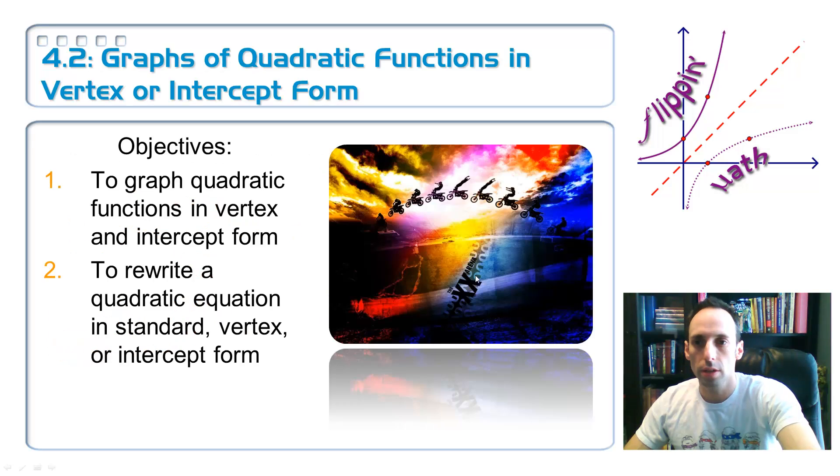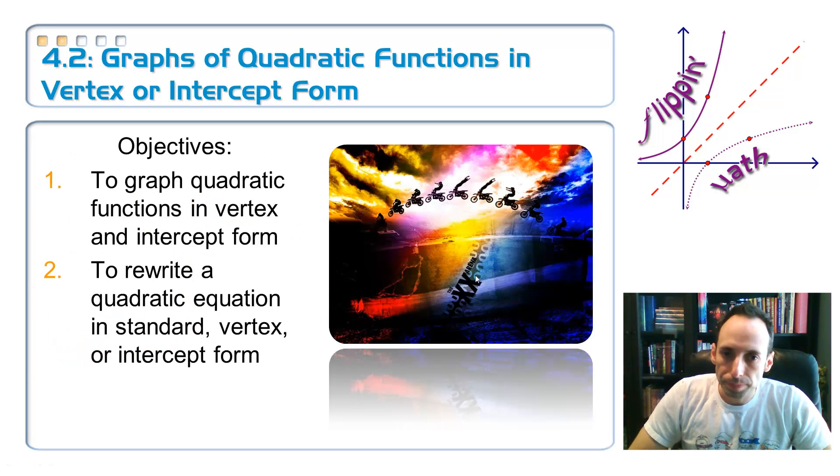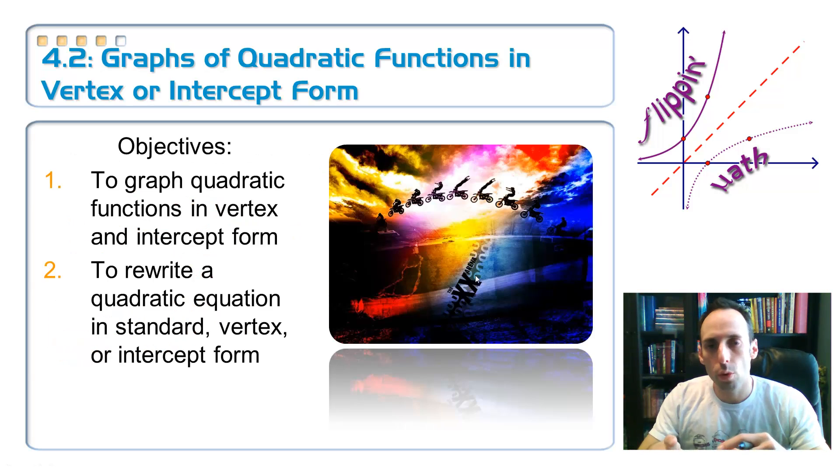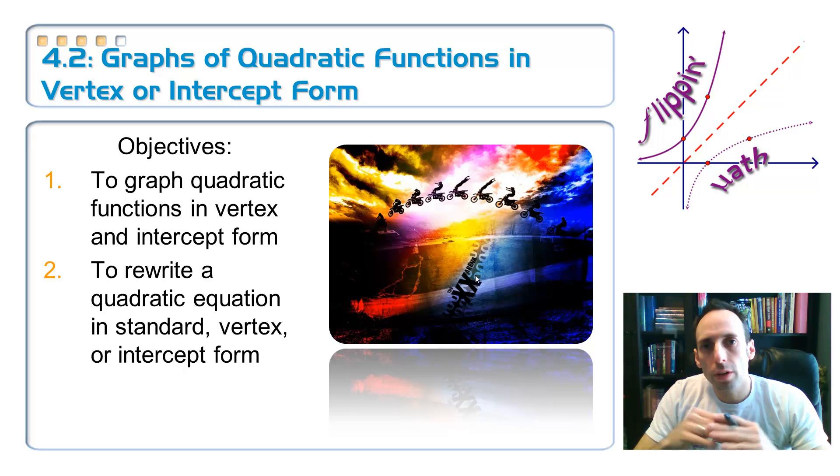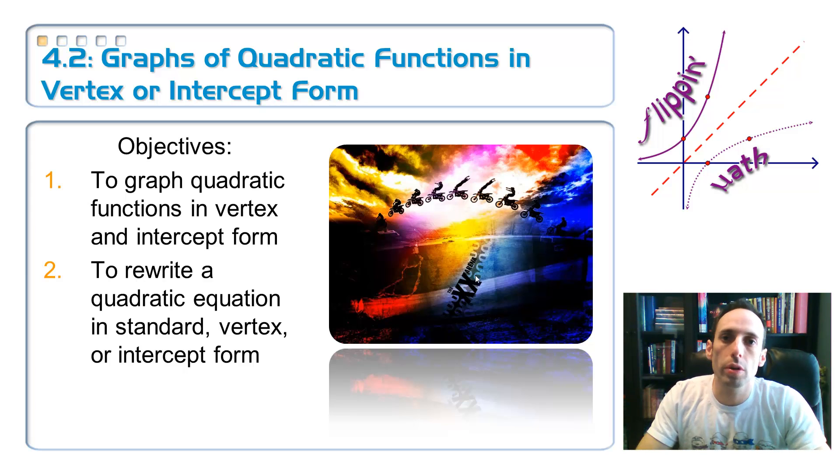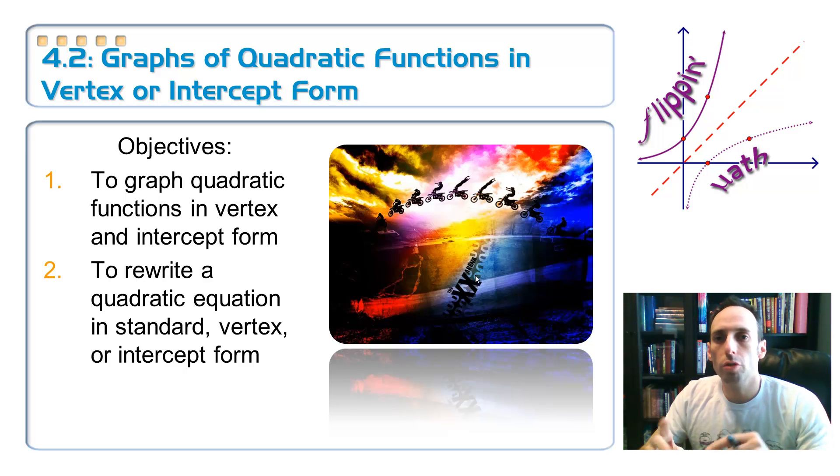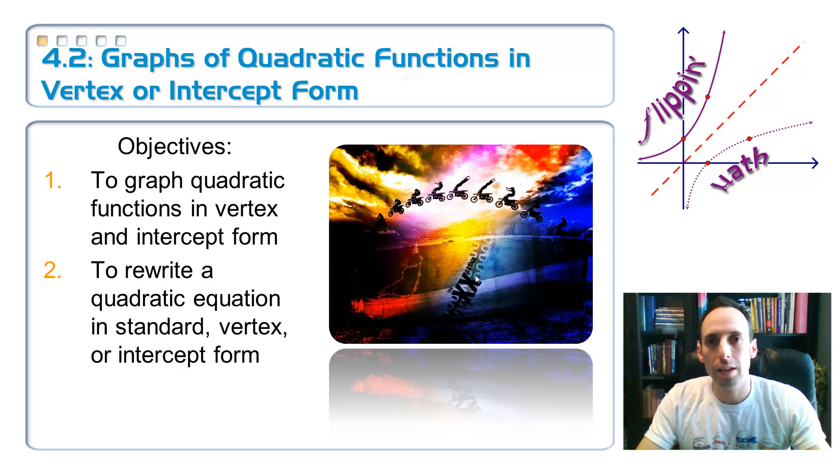So in this lesson, we were graphing quadratic functions when they were in vertex form and intercept form, much, much simpler than whenever it was in standard form. Because in standard form, you had to find the vertex and the intercepts, and both of these forms give you at least one of those things. So it's pretty nice. And then finally, taking our quadratic equation, whatever it is, and writing it into either standard form, intercept form, or vertex form.